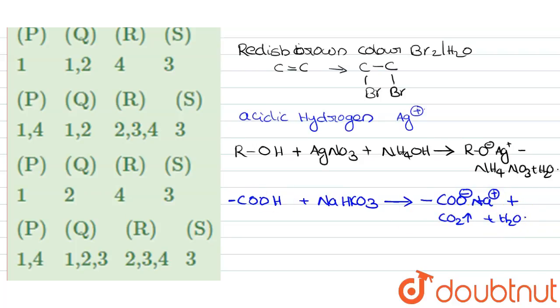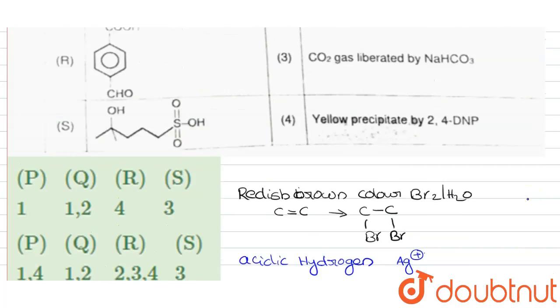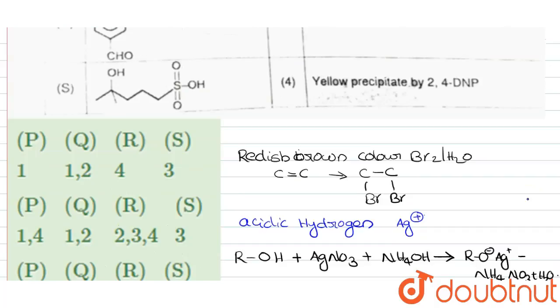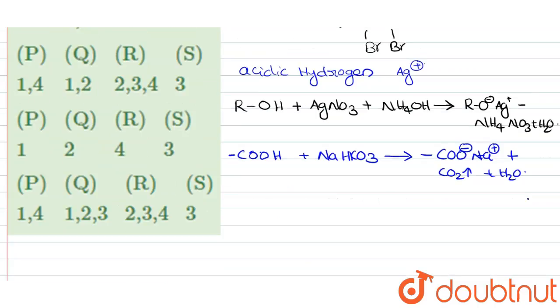And the next test is yellow precipitate by 2,4-dinitrophenylhydrazine. So this is the positive test for carbonyl group.